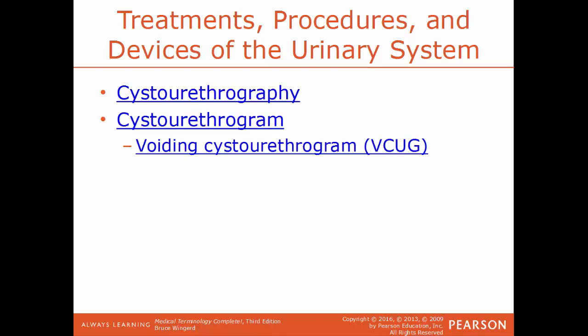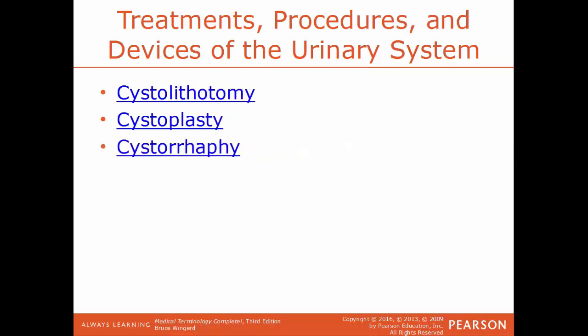Another type of cystourethrogram is a VCUG — voiding cystourethrogram — the visualization of the bladder and urethra while the person is voiding, while the person is urinating. Cystolithotomy is the process of cutting into the urinary bladder in order to remove a stone or stones from the urinary bladder.